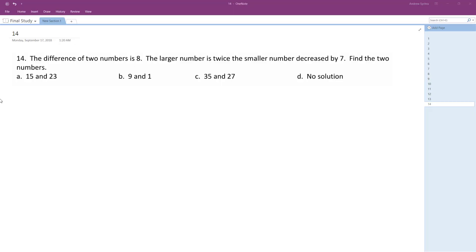Alright, so the difference of two numbers is 8, and the larger number is twice the smaller number decreased by 7. So, find the two numbers.